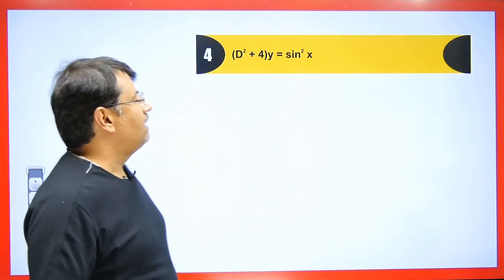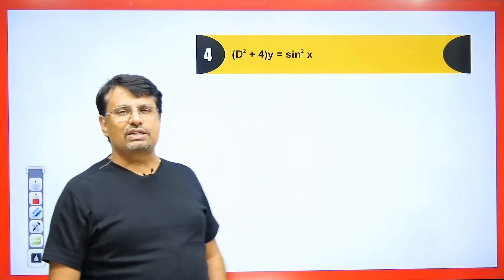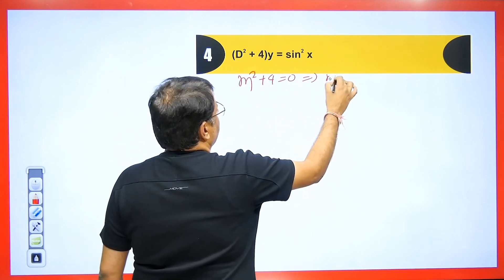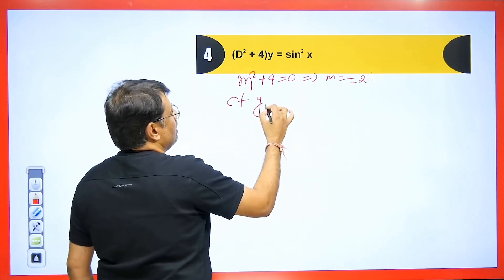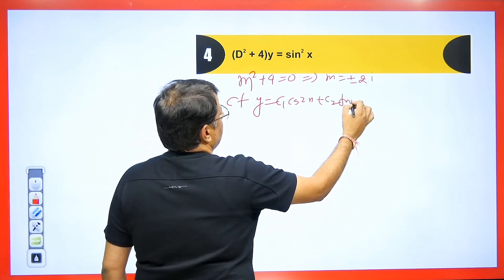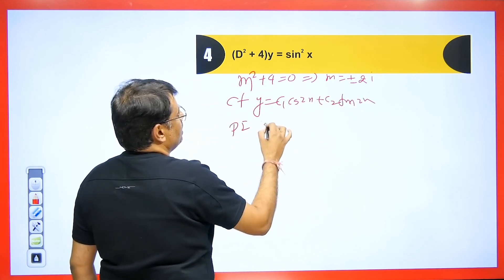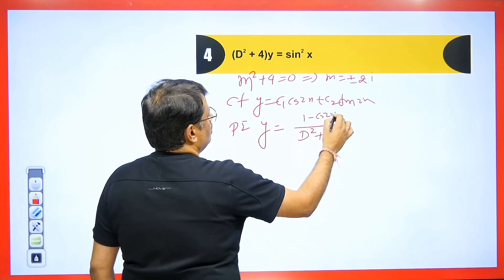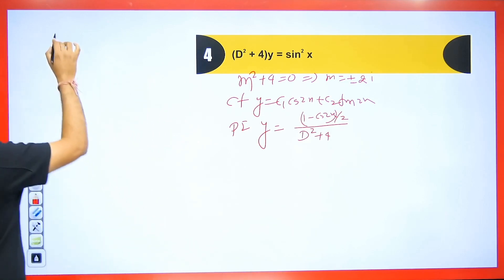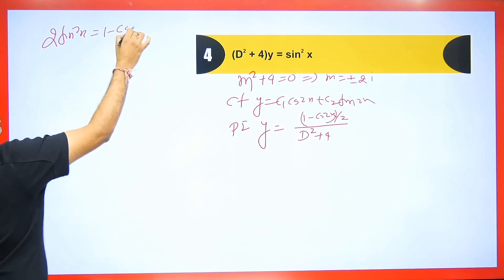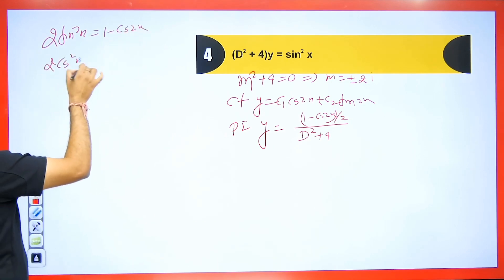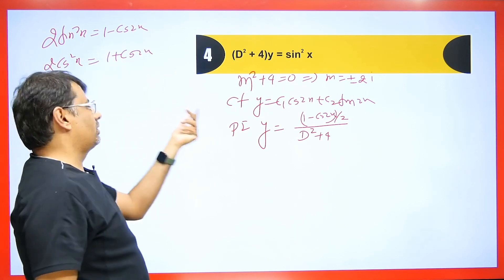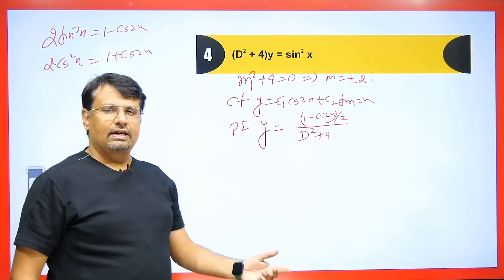Next: (D² + 4)y = sin²x. If we have sin²x or cos²x, we use trigonometric identities. Solving for CF: m = ±2i, so CF: y = c₁cos 2x + c₂sin 2x. For PI, we use the identity: 2sin²x = 1 − cos 2x, so sin²x = (1 − cos 2x)/2. Similarly, 2cos²x = 1 + cos 2x. Since it is sin²x here, we use (1 − cos 2x)/2.